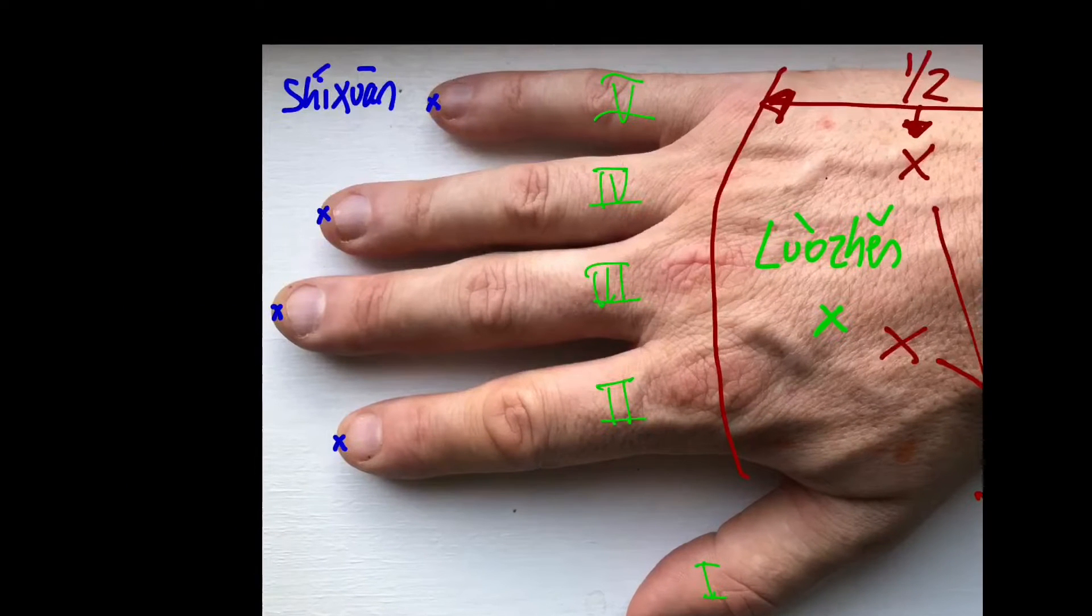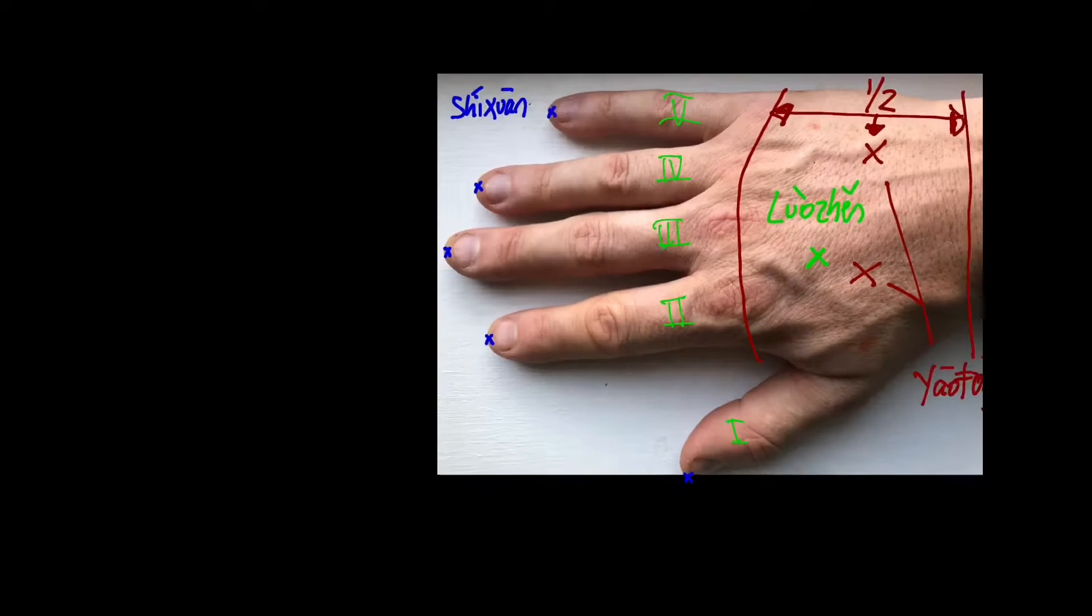Finally, we've got 0.1 sun from the tip of the nails, right on the tips of the fingers, the shui shuan points, the ten spreadings.